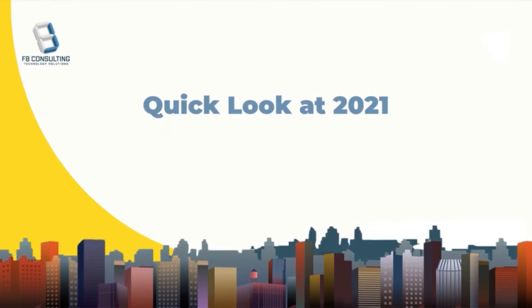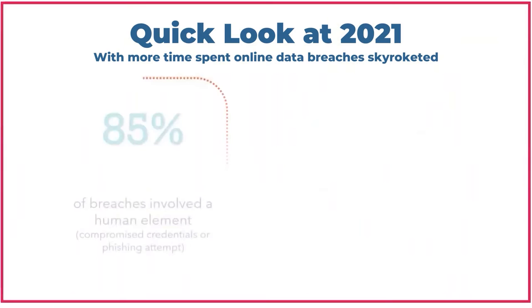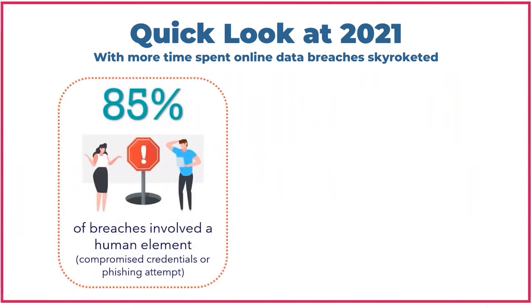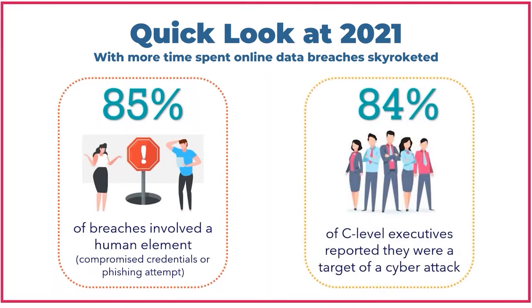Let's get started by taking a quick look back at 2021. With more time spent online, data breaches skyrocketed. 85% of these breaches involved a human element, which means that we were accidentally putting our credentials into a phony website or clicking on a malicious link. And 84% of C-level executives reported that they were the target of a cyber attack. So we see that there are targeted attacks sent to executive level employees within organizations and that we are all capable of human error.